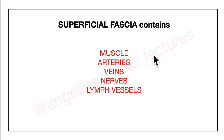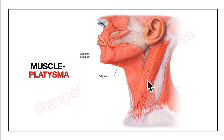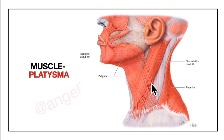The superficial fascia over the posterior triangle of the neck contains certain muscles, arteries, veins, nerves, and lymph vessels. Now we will be looking at each one of them. Looking at the first structure, that is the muscle.